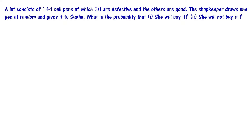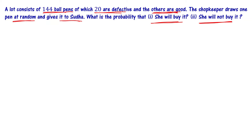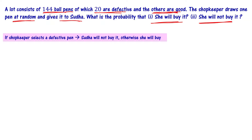A lot consists of 144 ball pens, of which 20 are defective and the others are good. The shopkeeper draws one pen at random and gives it to Sudha. Out of 144 pens, 20 are defective and 124 are good. The basic assumption is: if the shopkeeper selects a defective pen, Sudha is not going to buy it; otherwise she will buy it.